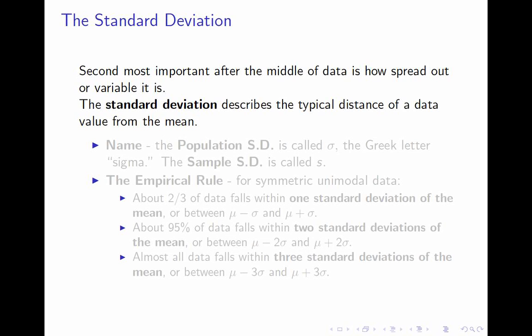The thing that measures that is the standard deviation. You should take that as the typical distance of a data value from the mean. I'm going to take a little while before I get to the definition because the definition is a kind of complicated formula and is not the most important thing here. The first thing I'll tell you about is its name. It has two names depending on whether you're in the population context or the sample context.